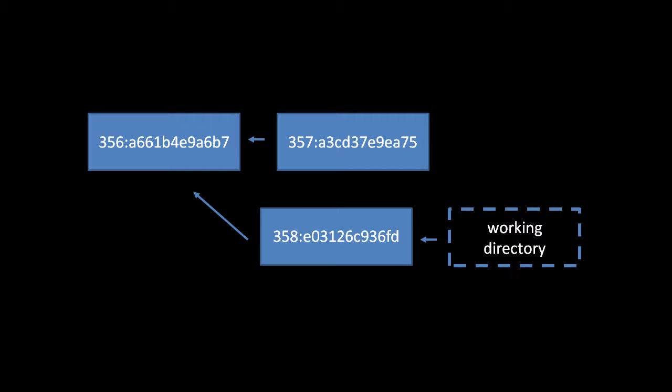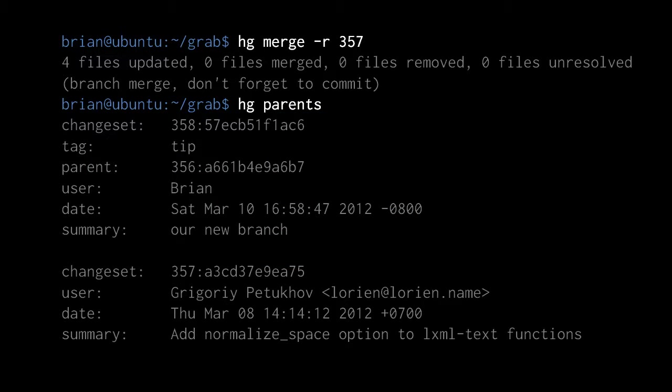In our example, we're just going to merge our pristine working directory with a parent of 358 with changeset 357. We do so with the command hg merge -r 357. Mercurial then gives us a report of how the merge went — what it did and if there were any conflicts that Mercurial couldn't resolve. In this case there were no conflicts. So what we would normally do now is commit this merge, though a really good practice would be to test this version of the code first. And to demonstrate that after the merge the working directory now has two parents, invoking hg parents shows both revision 358 and 357 as the current parents.